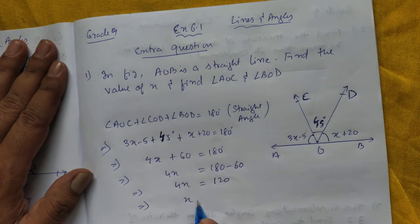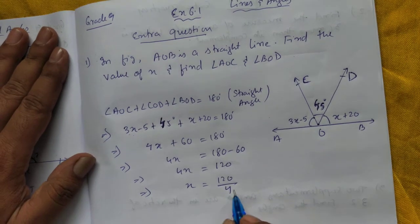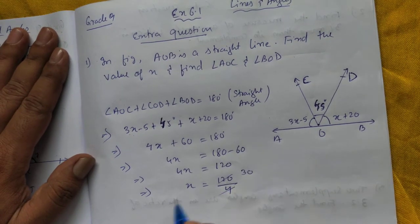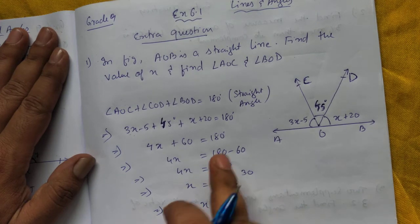4X equals 120, so what will be X? 120 by 4, cancel it, 30 times. So X is 30, we got the value of X.